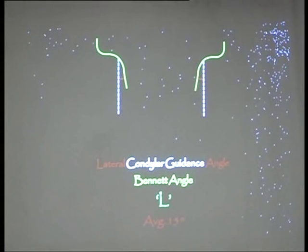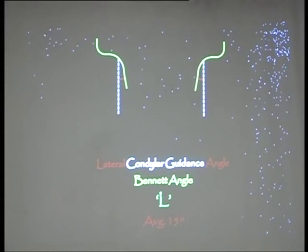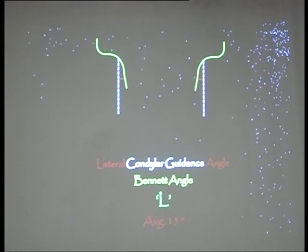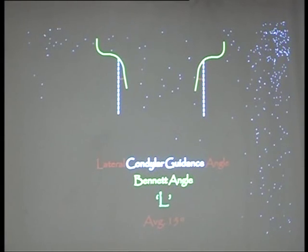So we have two condylar guidance angles that we need to know. One is the H value, which is the principal determinant. And there is an L value, which is less significant but significant nonetheless. Is this clear — H and L? Anyone with a doubt up to this point?